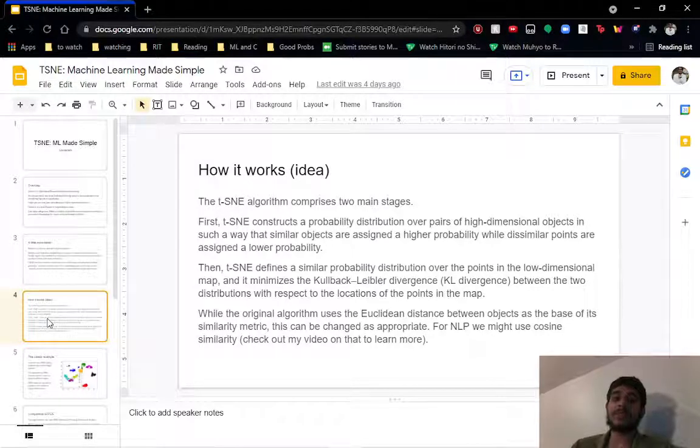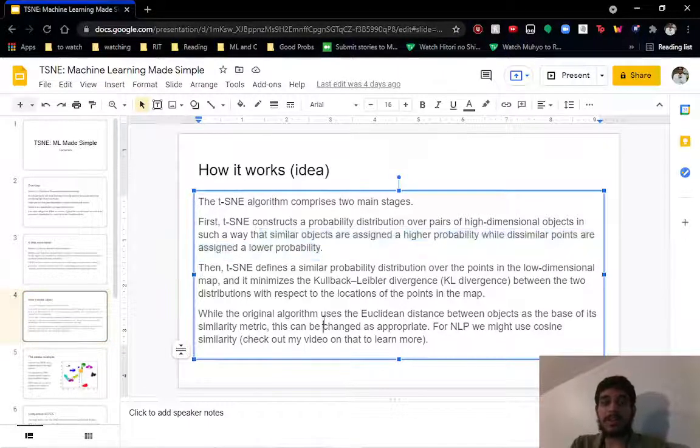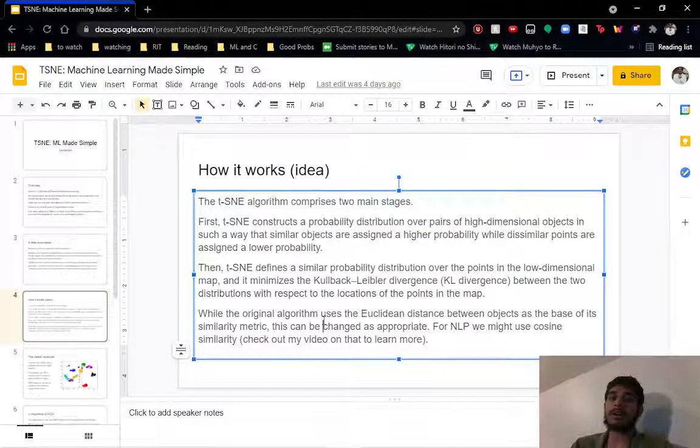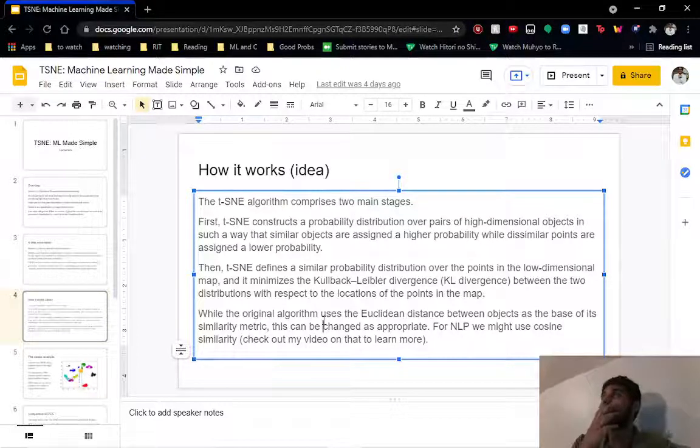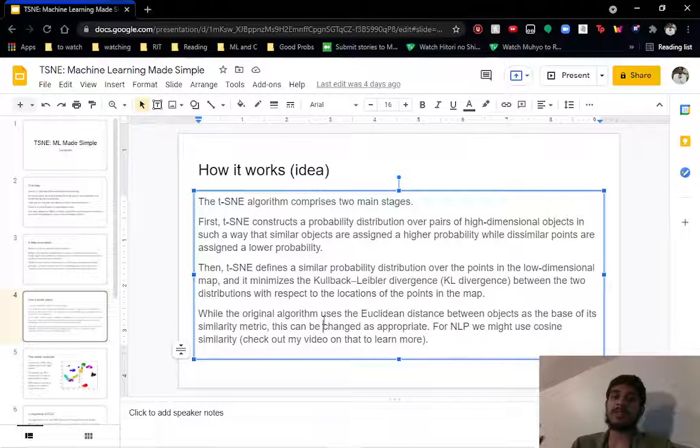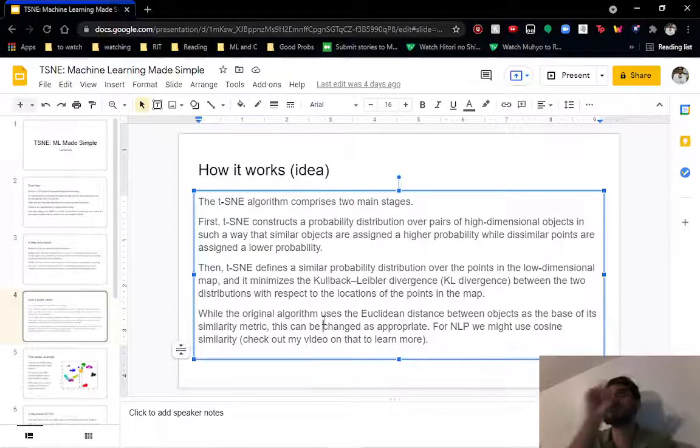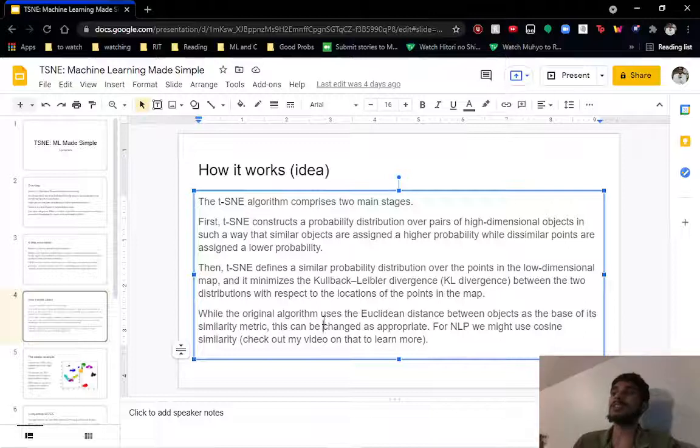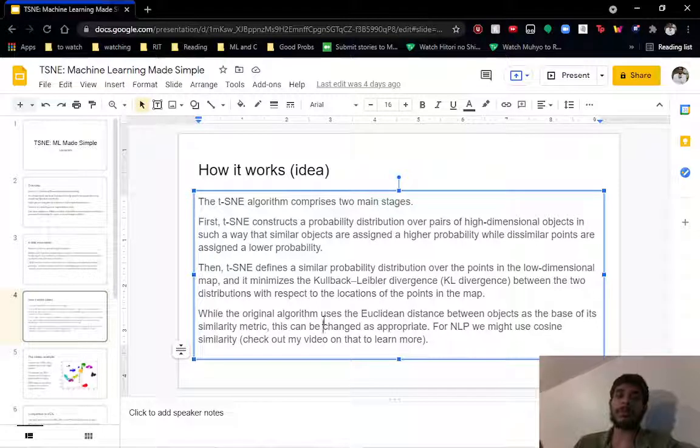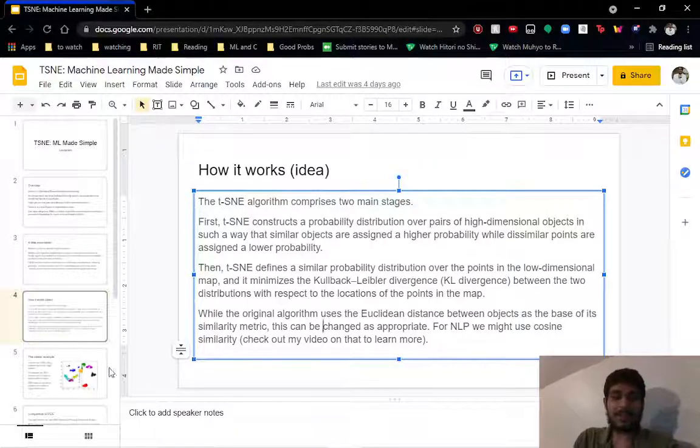Now the original algorithm used Euclidean distance as the basis of its similarity when constructing this probability distribution. But depending on your kind of task, you might want to change that to something more suitable. For example, NLP uses cosine similarity for computing similarity between two blocks of text. In that case, we might substitute that as our similarity metric for our TSNE algorithm. To know more about cosine similarity and how cool it is and how it works, be sure to click one of the video cards that show up above. I made a video on it a while back. Let me know how you liked that video in the comments.